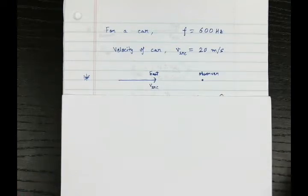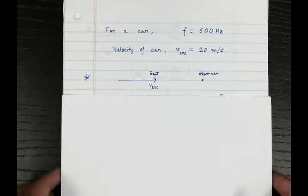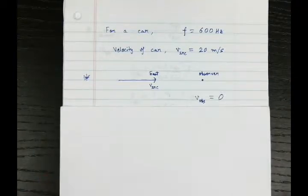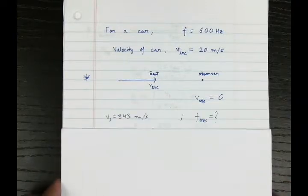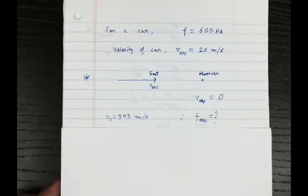We have an observer standing at the east who is stationary with no velocity. We want to find what is the frequency that the observer hears. The velocity of sound in air is 343 meters per second, and we want to find the frequency detected by the observer.